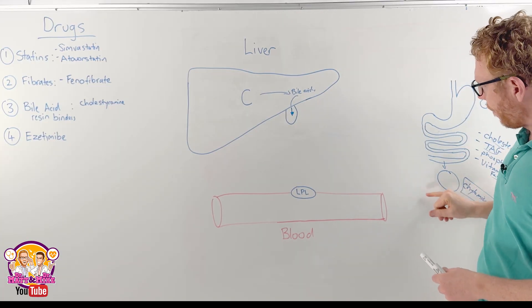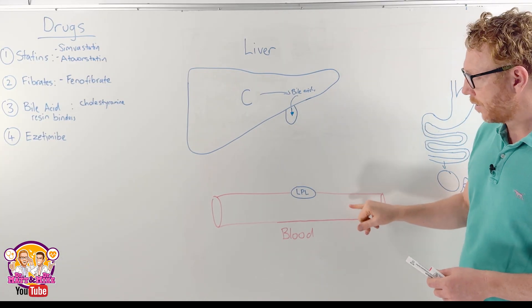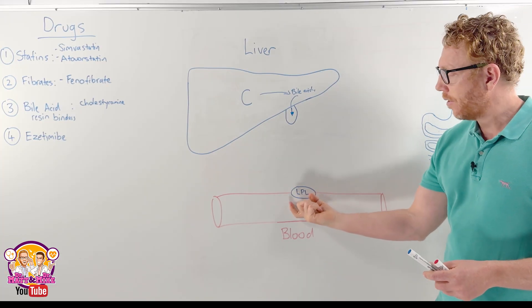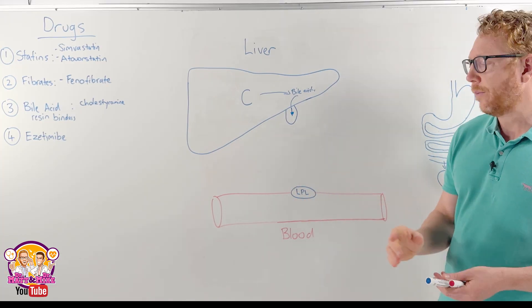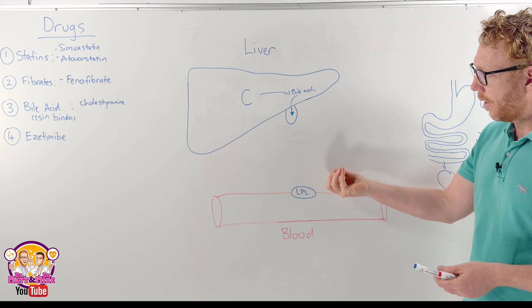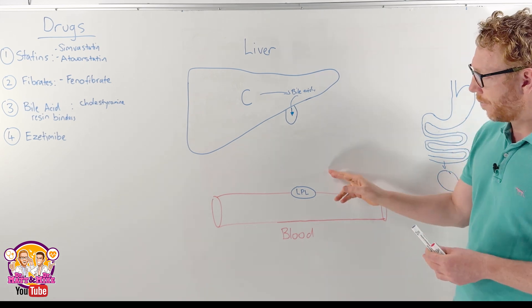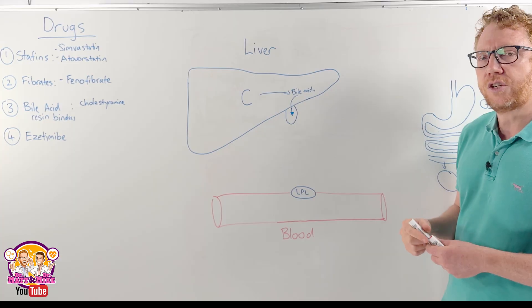So the chylomicron will eventually make its way into the blood where once it encounters certain enzymes on the walls of endothelium called lipoprotein lipase, what happens is it will start extracting the triglycerides out of the chylomicron and the triglycerides will get put into tissue.